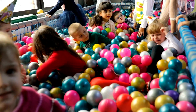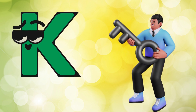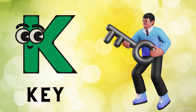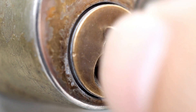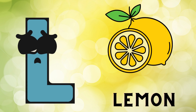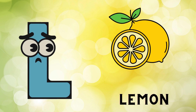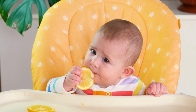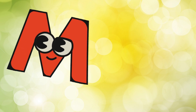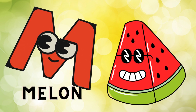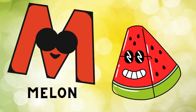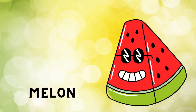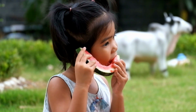K is for key. K-K-K-K-K K. Key. L is for lemon. Lemon. Lemon. L. Lemon. M is for melon. M-M-Melon. M-M-Melon. M-Melon.